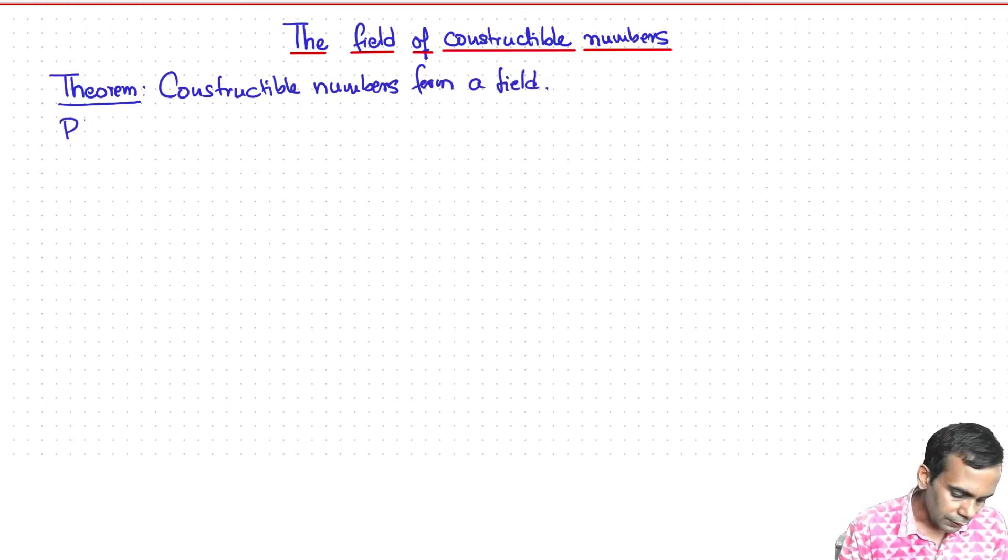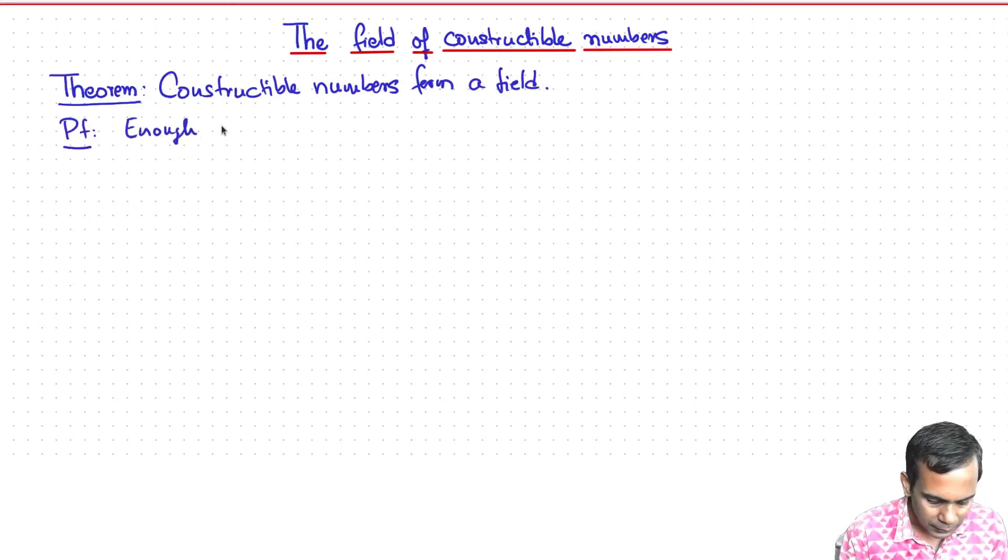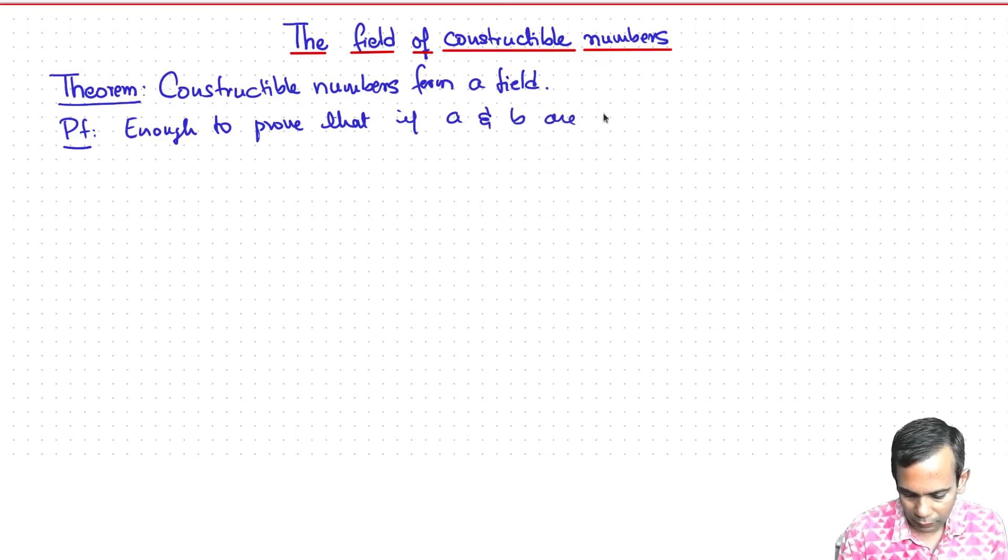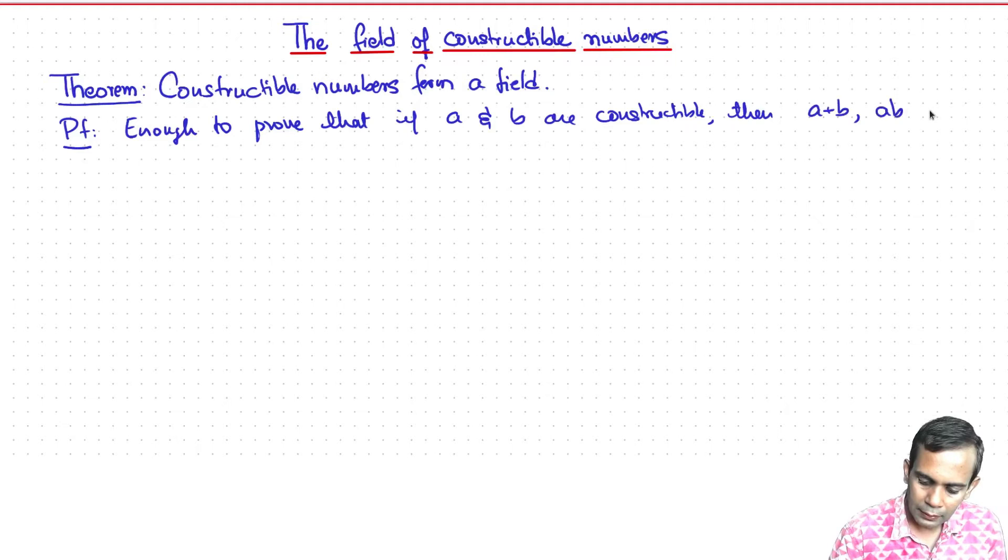So to show this, it's sufficient to prove that if I have two constructible numbers, then a plus b, ab, and a inverse 1 over a are constructible.